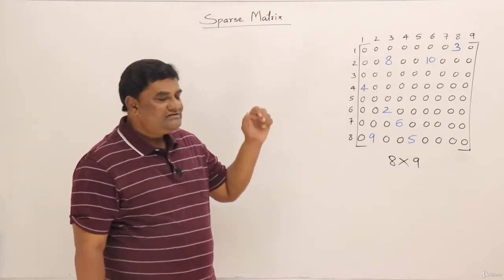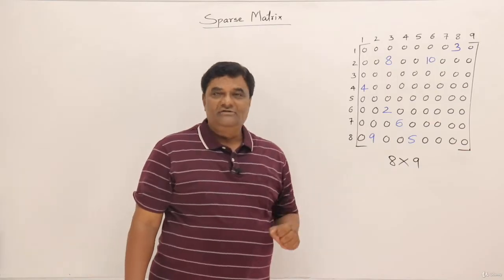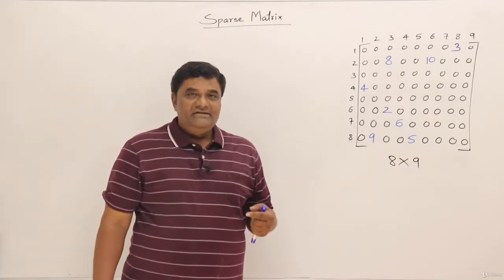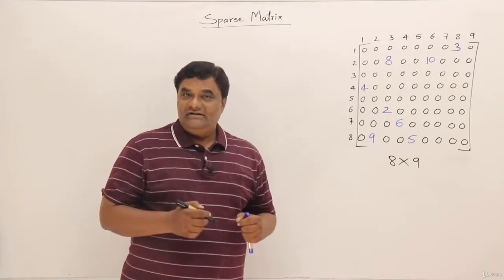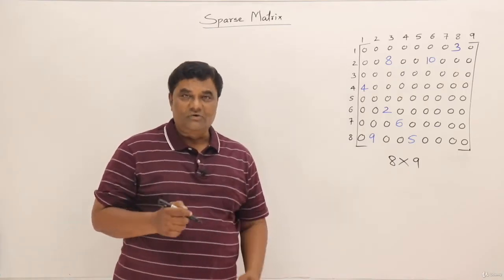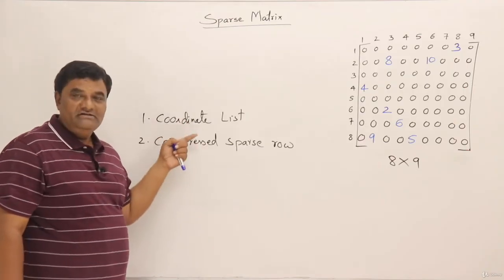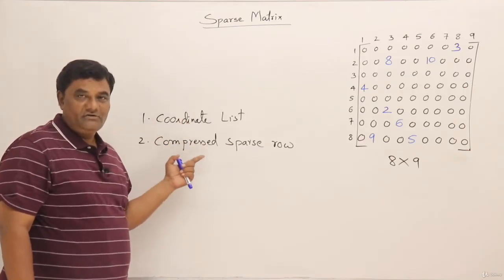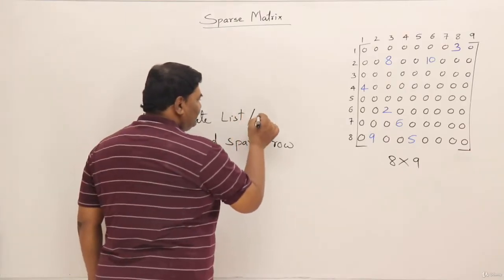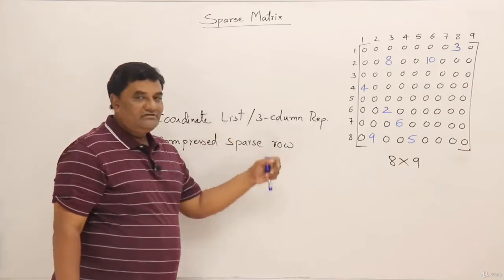For storing only nonzero elements, there are more than one approach. The first method is coordinate list, and the second is compressed sparse row. The coordinate list is also called the three-column representation.